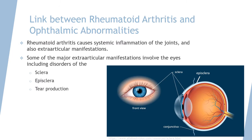Rheumatoid arthritis is characterized by a systematic inflammation of the joints, and it can also have extra-articular manifestations, meaning symptoms outside the joints can occur characteristically with RA. One of the organs where RA has its effect is the eyes. Specifically, eyes will develop disorders of the sclera, episclera, as well as tear production — the lacrimal gland and their ducts.